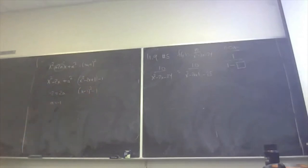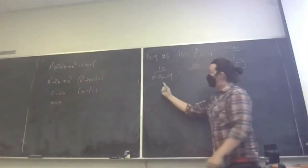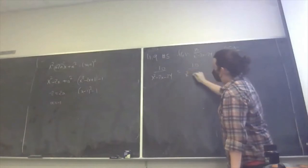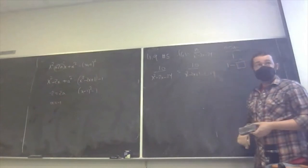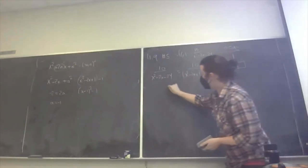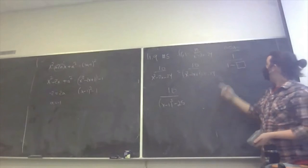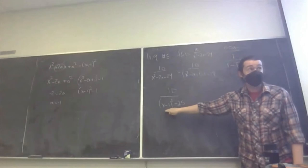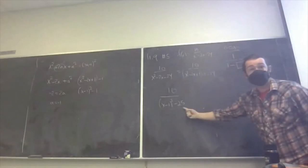That's completing the square — regardless of whatever method you've been taught, this is what's going on. My trick is noticing that if there was a plus 1 attached, it becomes a perfect square: x squared minus 2x plus 1 factors as (x minus 1) squared. So I want the plus 1 there, but I balance it by also subtracting 1. This part turns into (x minus 1) squared, and I'm left with a minus 25 as well.